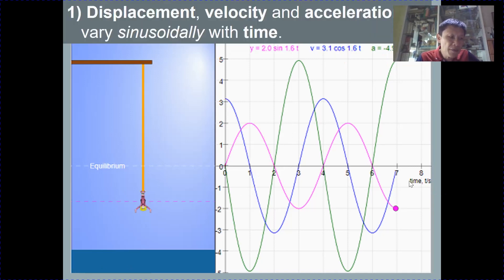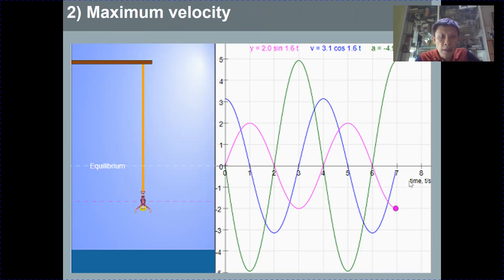So there are five important deductions about SHM. First, displacement, velocity and acceleration all vary sinusoidally with time. Sinusoidally, like I said, can be either cosine or sine. Second important point, you will notice that the maximum velocity, as per the blue graph, is 3.1. And you get 3.1 by using the expression omega x0.